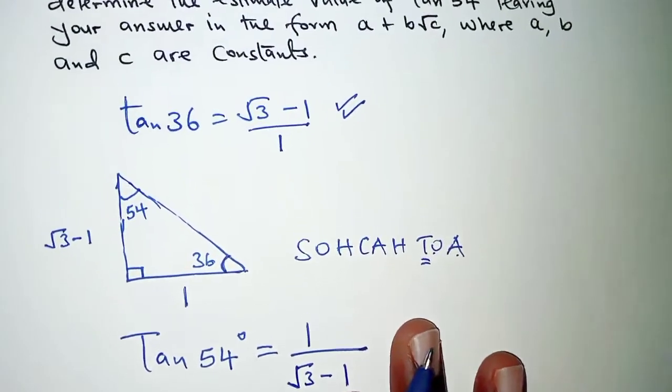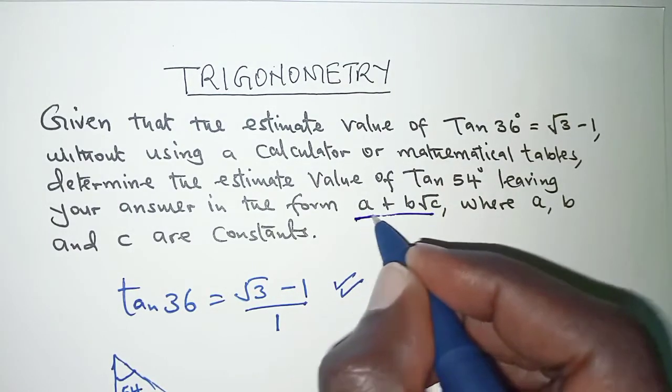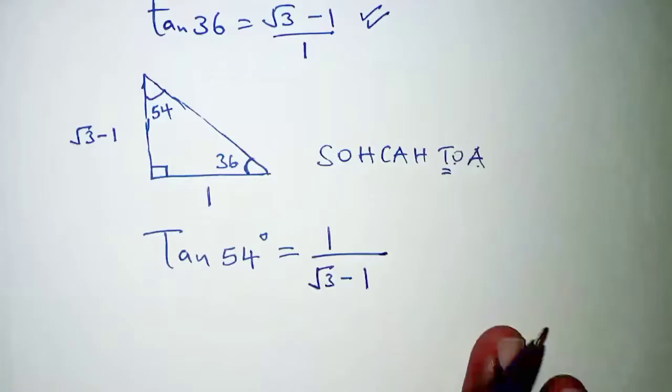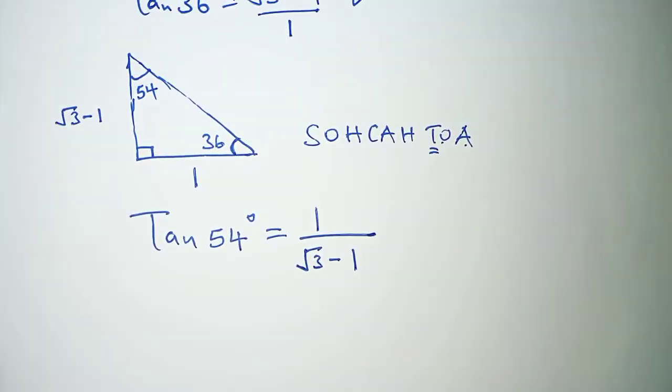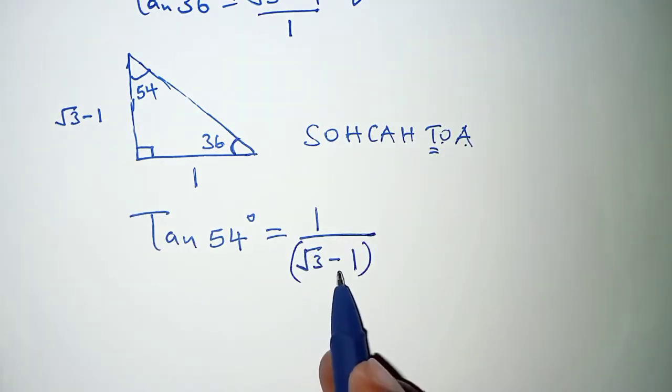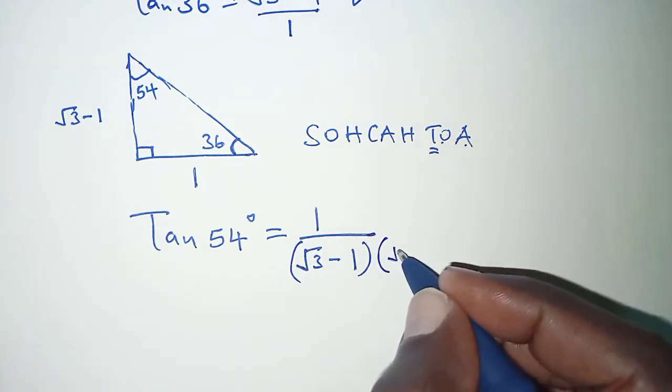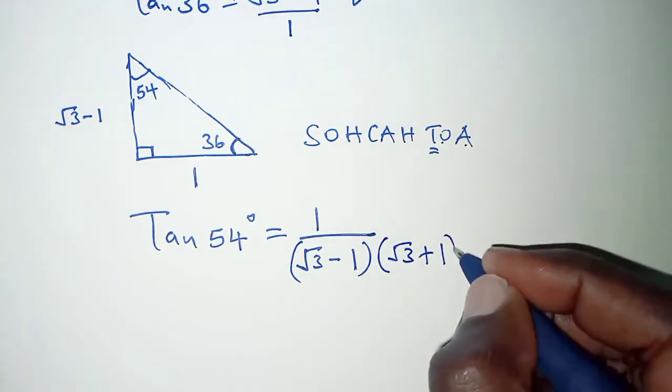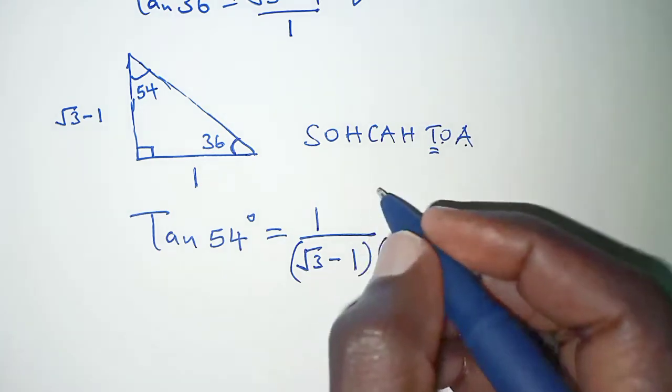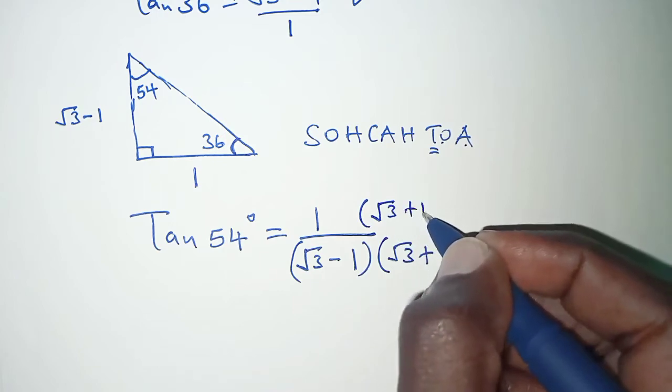At this particular point we will not leave our answer in that form. We will try to simplify it so that we have our final answer in the form a plus b root c. We will achieve that by rationalizing the denominator, and on the denominator we have root 3 minus 1. So we multiply by the conjugate and its conjugate is root 3 plus 1, so we notice that it's only the sign that has changed here, and then we multiply the numerator by the same factor, that is root 3 plus 1.